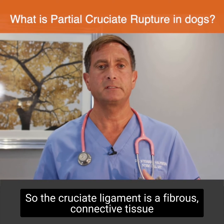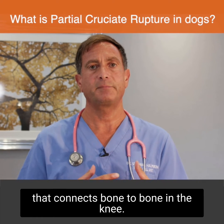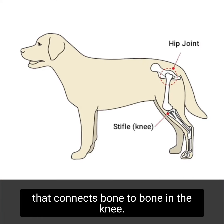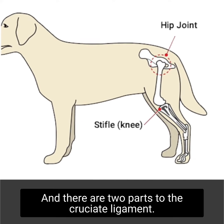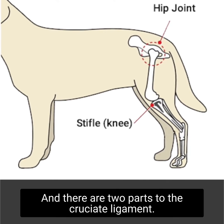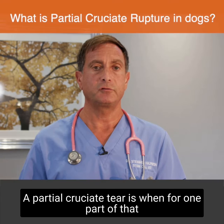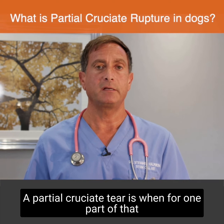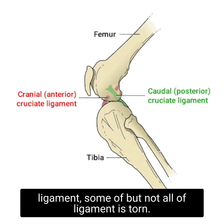The cruciate ligament is a fibrous connective tissue that connects bone to bone in the knee, and there are two parts of the cruciate ligament. A partial cruciate tear is when, for one part of that ligament, some of but not all of the ligament is torn.